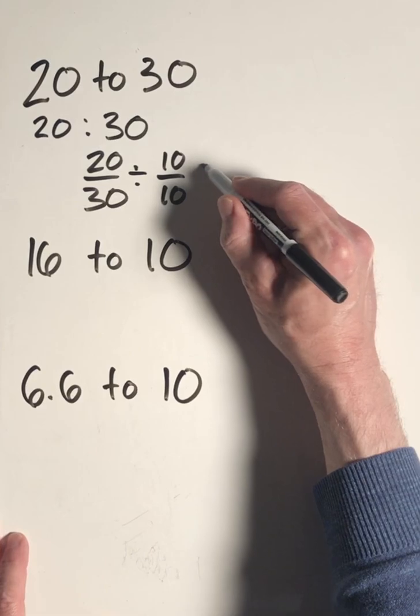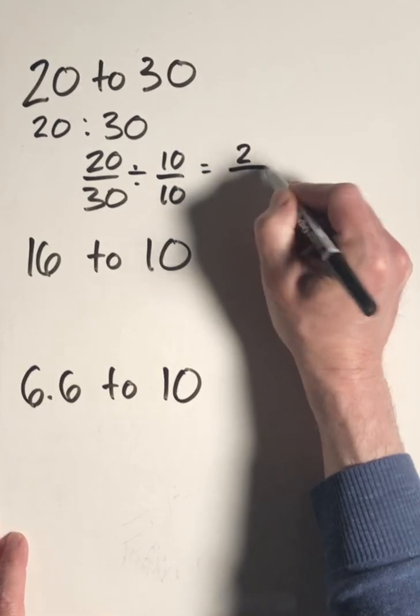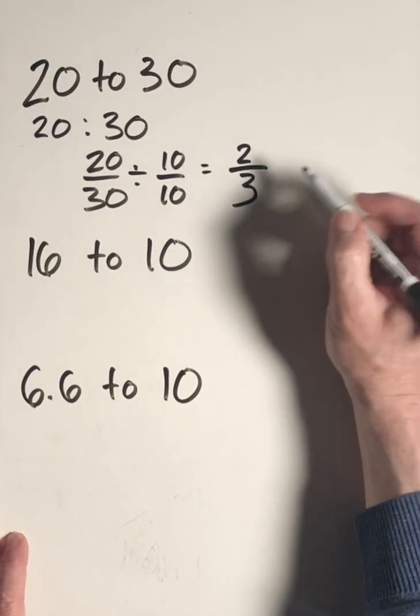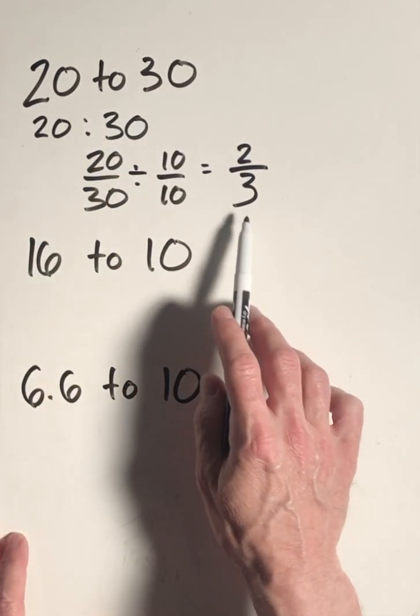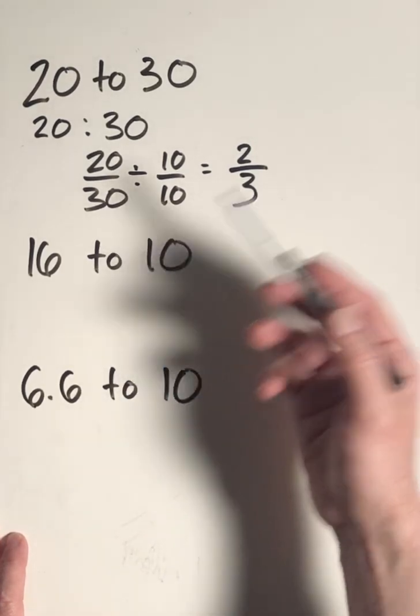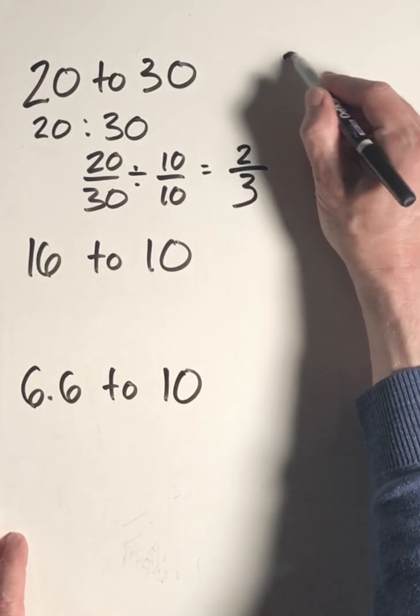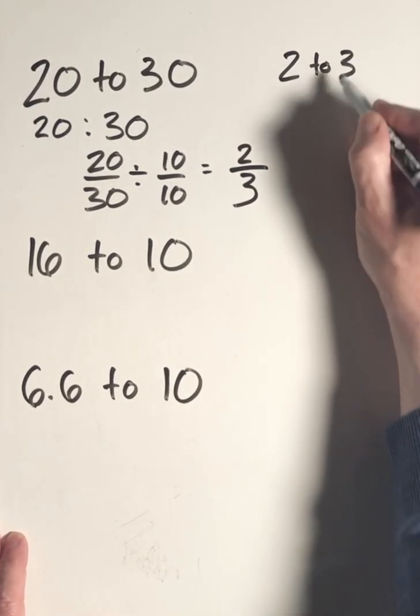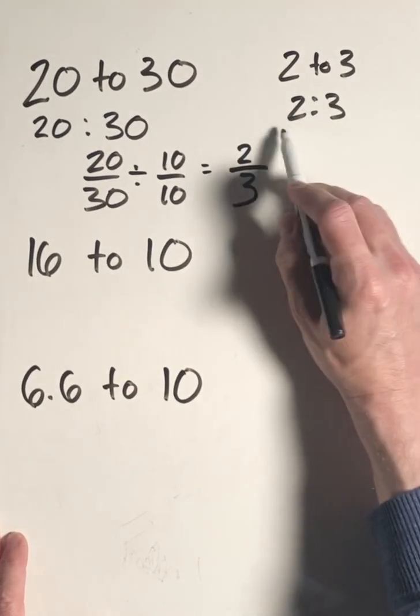So 20 divided by 10 is 2, and 30 divided by 10 is 3, so a ratio of 20 to 30 can be written as the fraction 2/3. Likewise, we could also have rewritten this ratio as 2 to 3 in either one of these two ways.